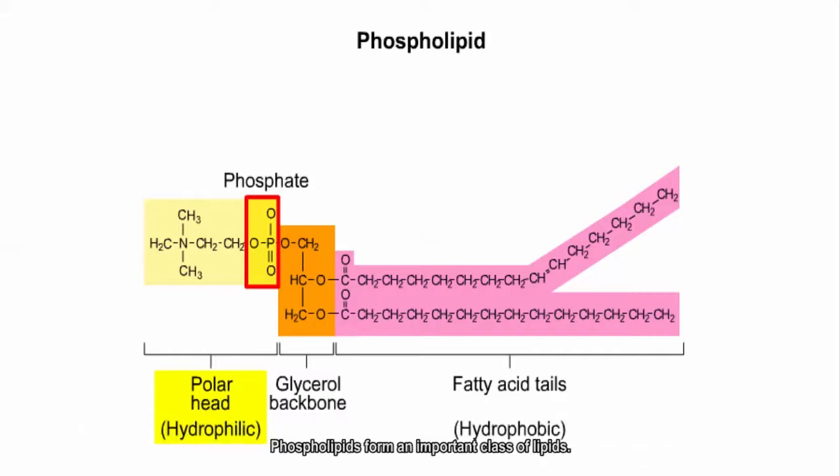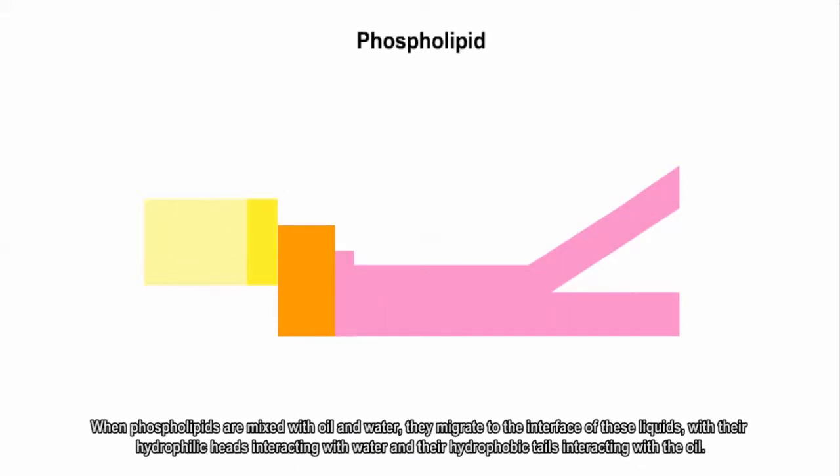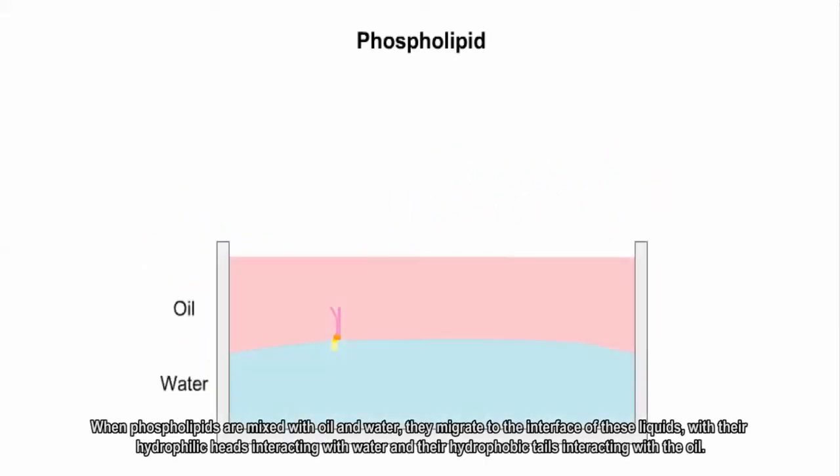Phospholipids form an important class of lipids. When phospholipids are mixed with oil and water, they migrate to the interface of these liquids, with their hydrophilic heads interacting with water and their hydrophobic tails interacting with the oil.